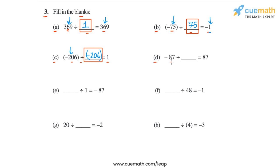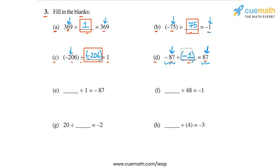Then in part d, we have minus 87 divided by blank is equal to 87. Let's first figure out the magnitude of the divisor and then its sign. The magnitude of the dividend is 87 and the quotient is also 87, so the divisor will have a magnitude of 1. Since the dividend is negative but the quotient is positive, the divisor must also be negative. So in part d, the answer is minus 1.